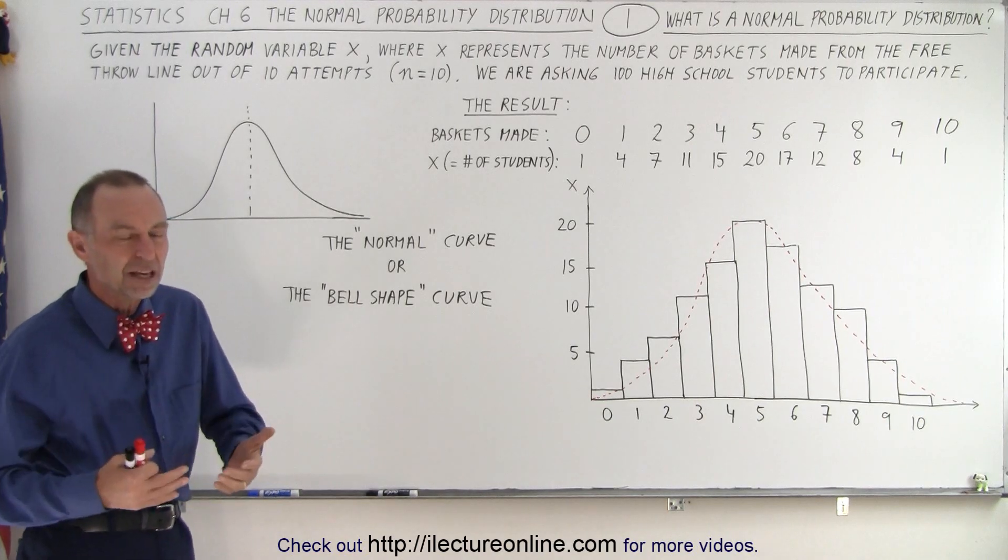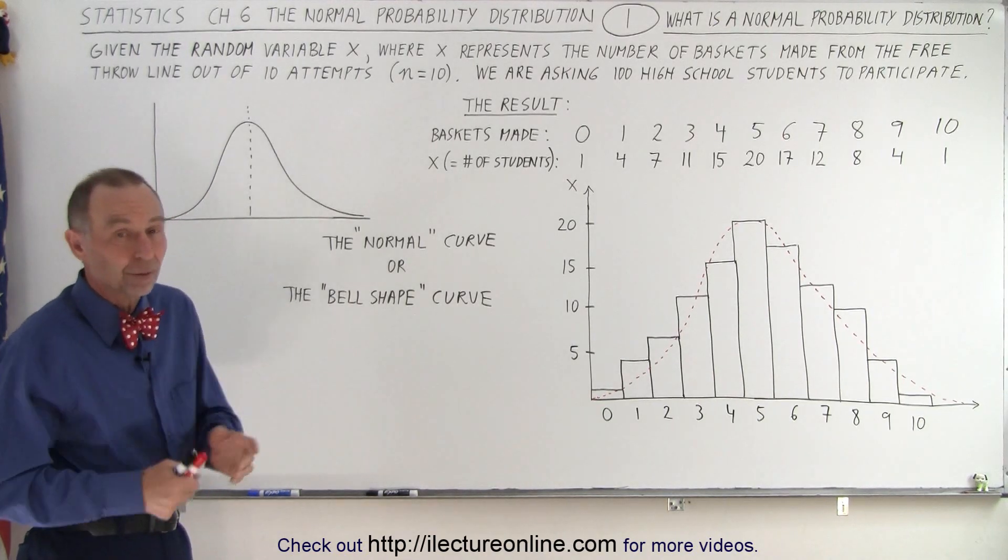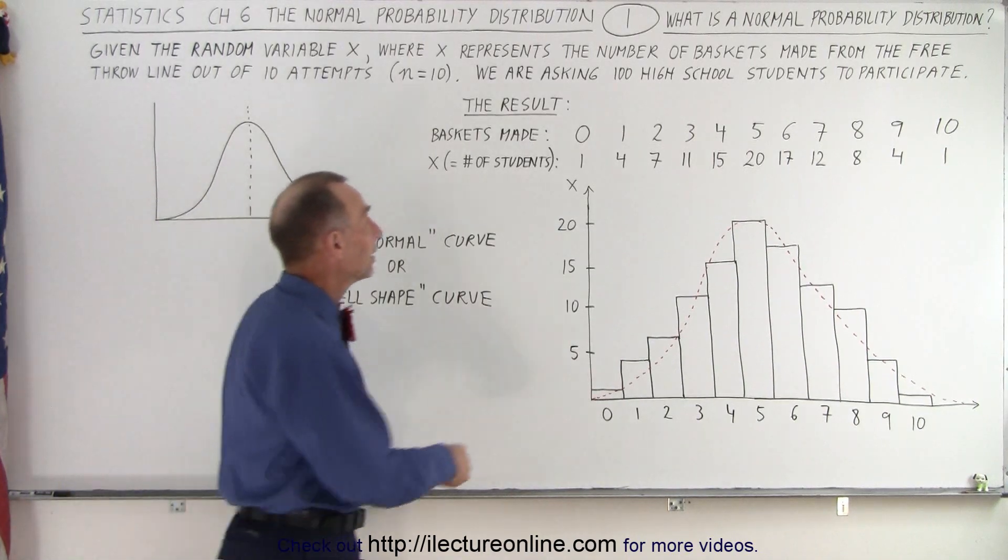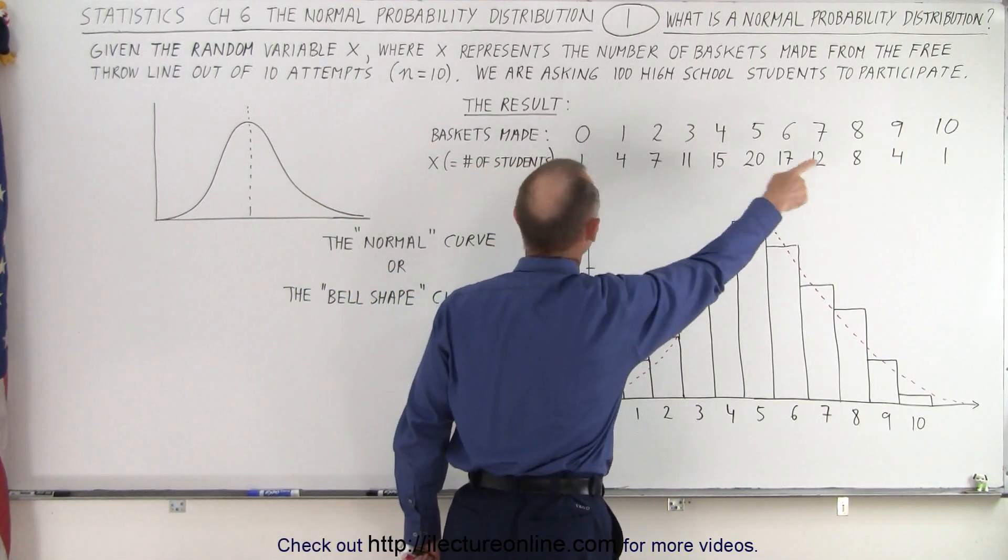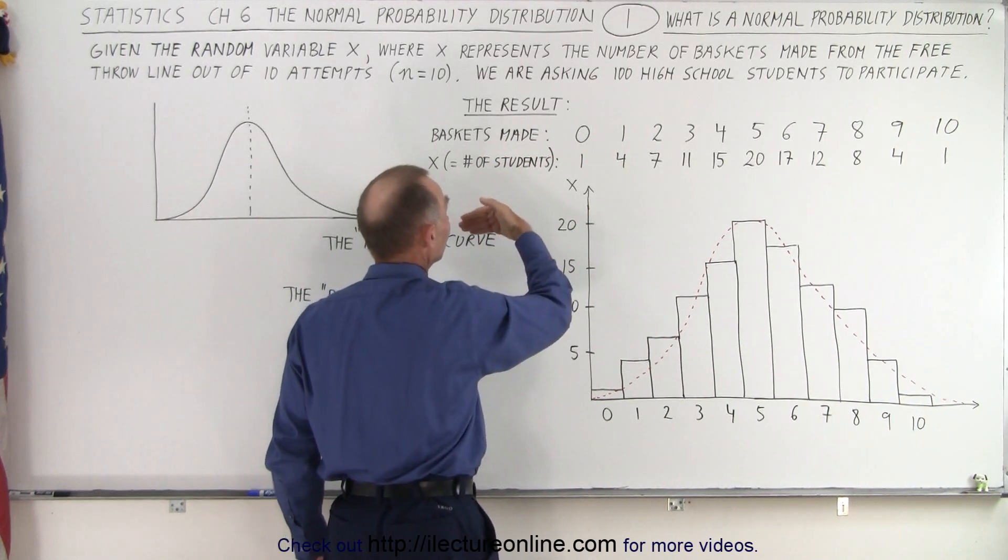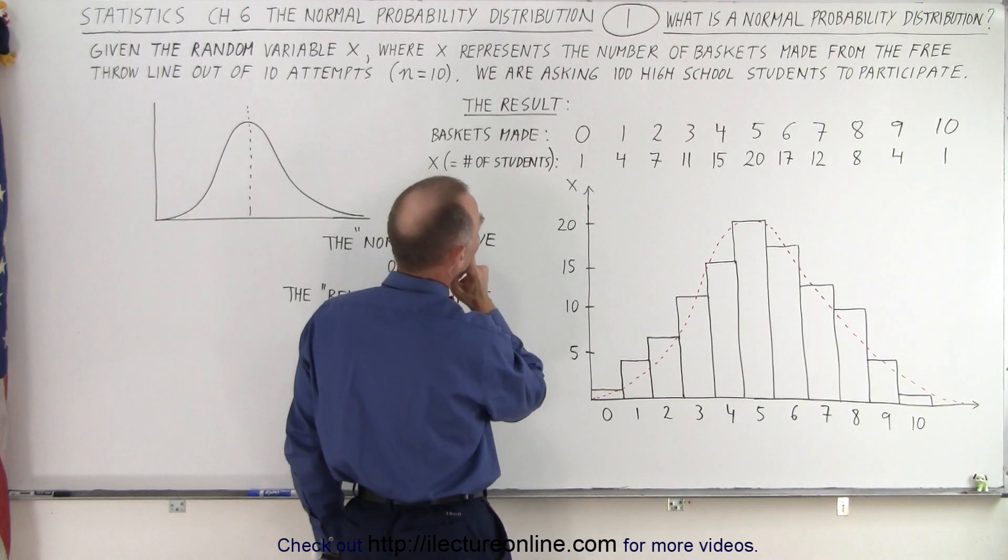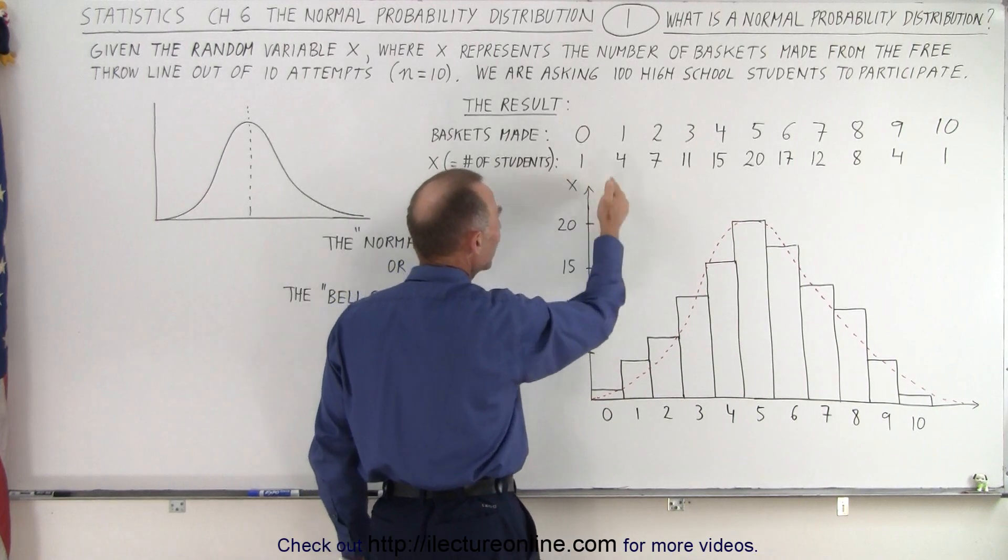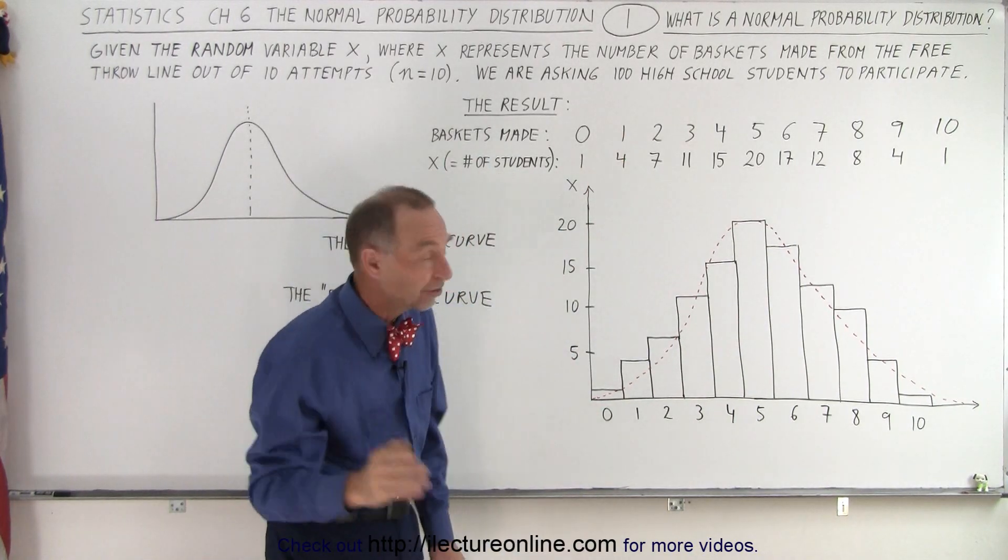And so they should be relatively successful in making some of those shots. Here you can see that, again, the numbers from 0 to 10 is the number of baskets made. And x, being the random variable, represents the number of students that have made a certain number of baskets.